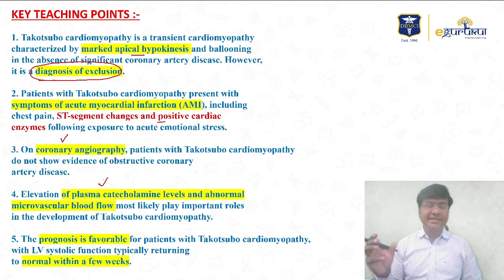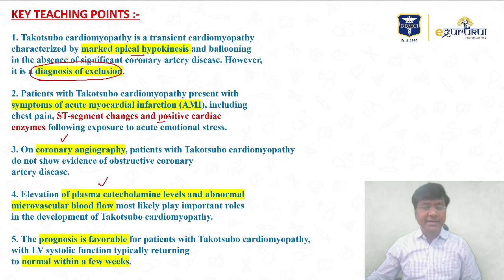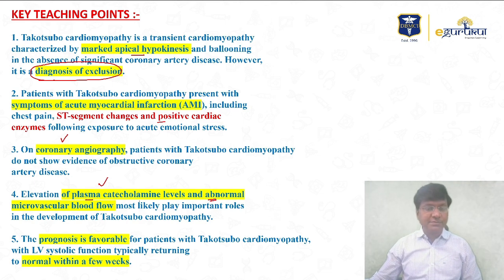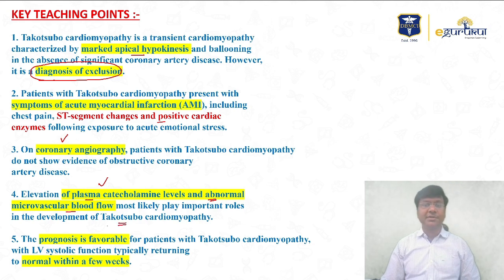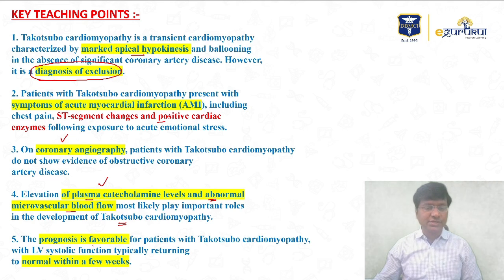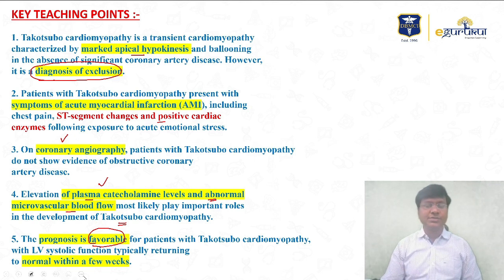Secondary to emotional stress, there is massive release of catecholamines, which act on the apex of the heart causing apical hypokinesia. Elevation of plasma catecholamine levels and abnormal microvascular blood flow most likely play an important role in the development of Takotsubo cardiomyopathy. The overall prognosis is good — it is a favorable condition and the individual will become normal within a few weeks.